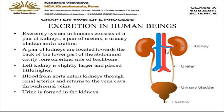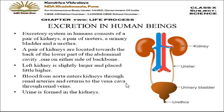The left kidney is slightly larger and placed a little higher than the right one. There are two tubes — an artery and a vein. Blood from the aorta enters the kidney through renal arteries and returns to the vena cava through the renal veins. Urine is formed in the kidneys as the main excretory product and is removed out through the urethra.